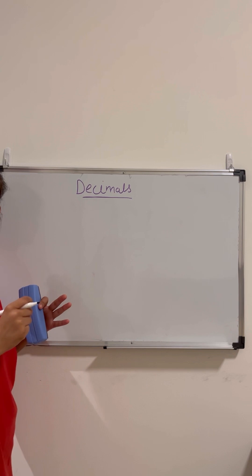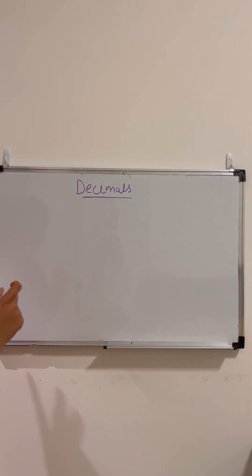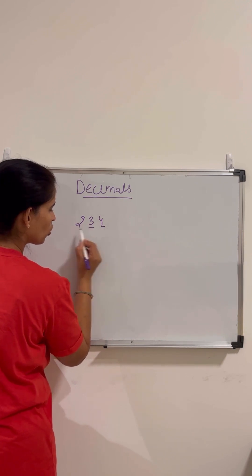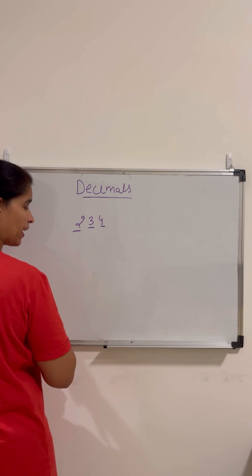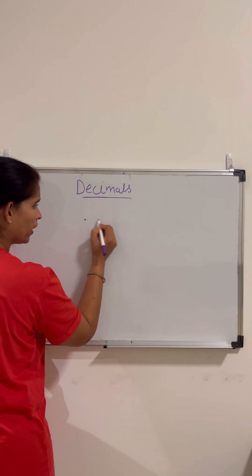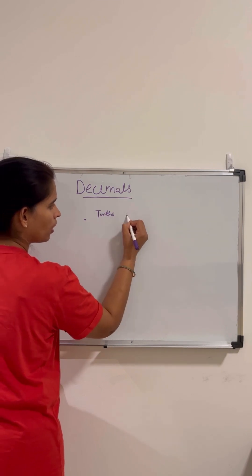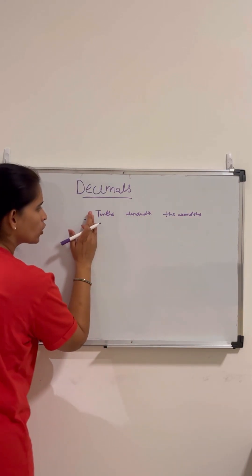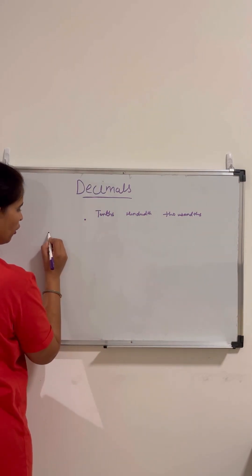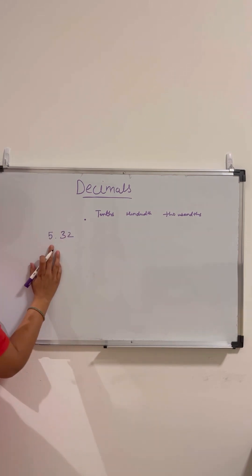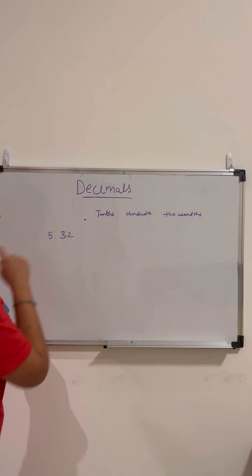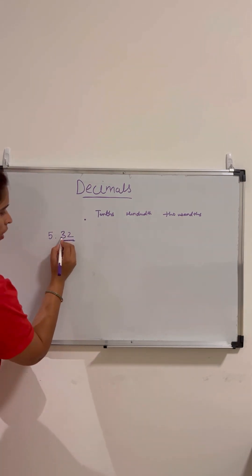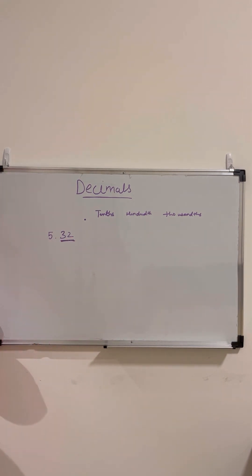We have already learned about place value in whole numbers, but in decimals the place value changes a little. In a whole number like 234, we know the places are ones, tens, hundreds. But in decimals, suppose the decimal point is here — it starts from tenths, then hundredths, then thousandths. There are no 'ones' on the decimal side. So if I have 5.32, the .32 is called 32 hundredths.